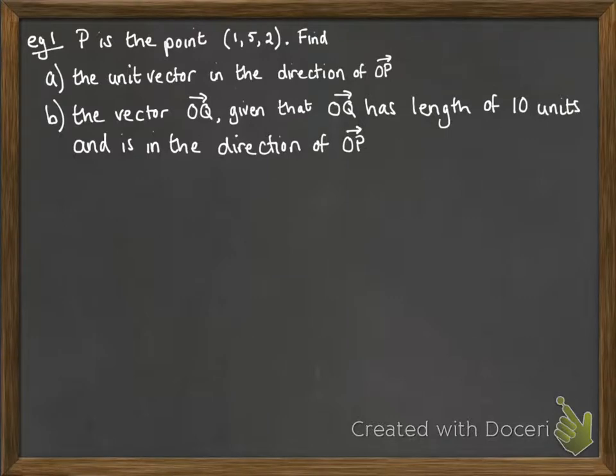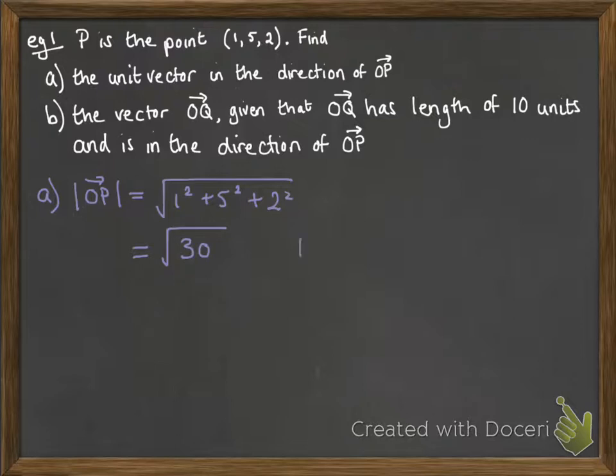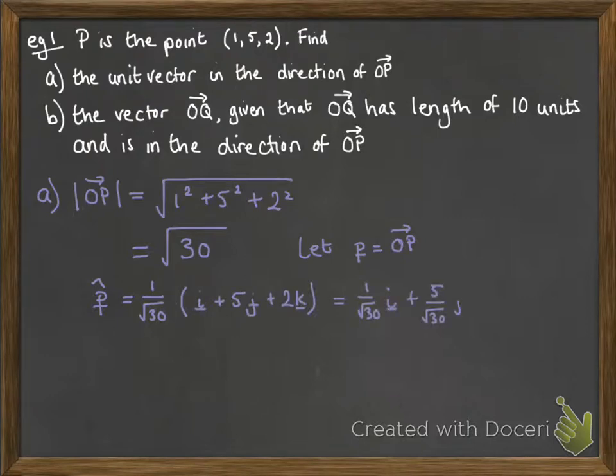First we need the unit vector in the direction of OP. The modulus of OP is root 30. I'm just going to call that vector OP as that little p there to make it easier with the notation. What I've done there is take the vector that gets us to (1,5,2) which is i plus 5j plus 2k and divide it by the modulus. So that's that 1 over root 30 in front of it. Or each of the i, j and k parts have been divided by root 30.